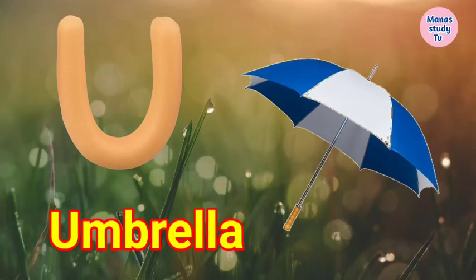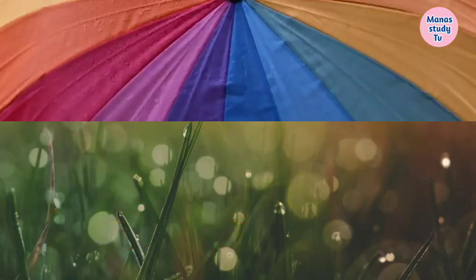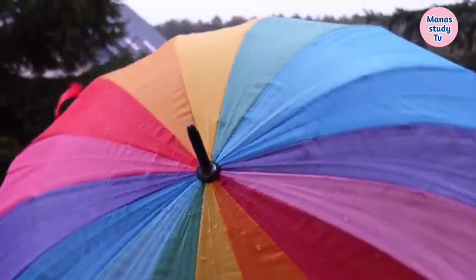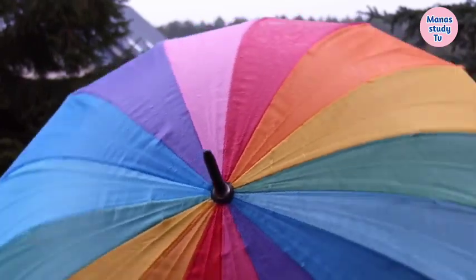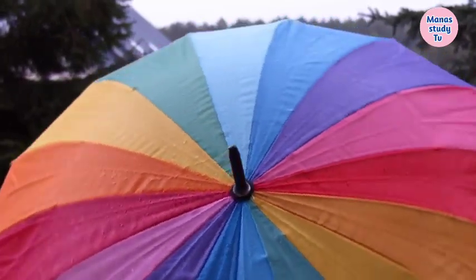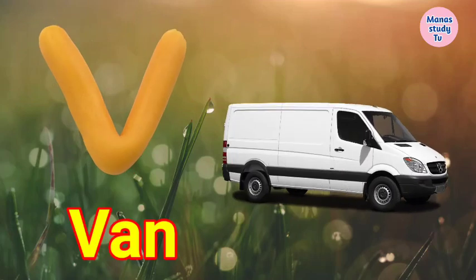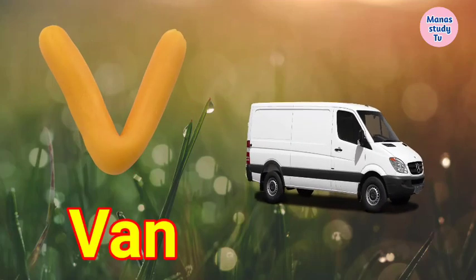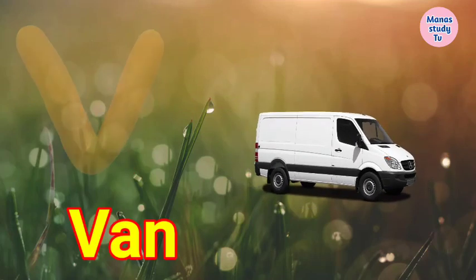U for Umbrella. Umbrella means Chhata. V for Van. Van means Gari.